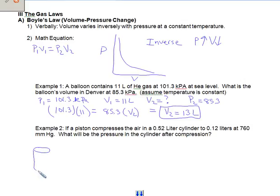We've got a piston. So there's our plunger on the piston. We start off and we've got 0.52 liters down here. We're going to push the piston down.